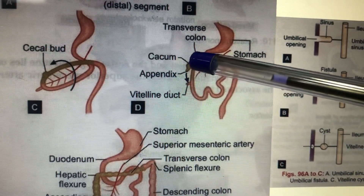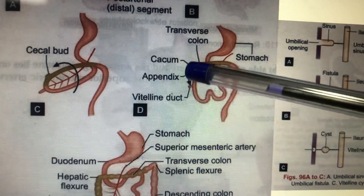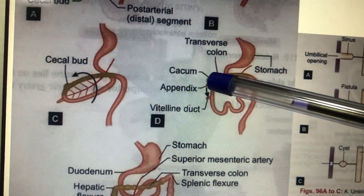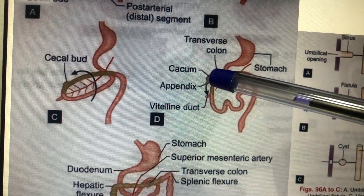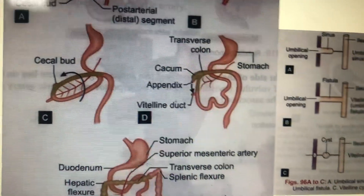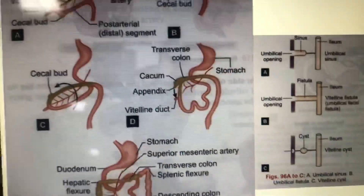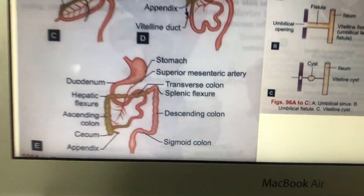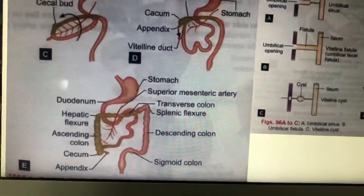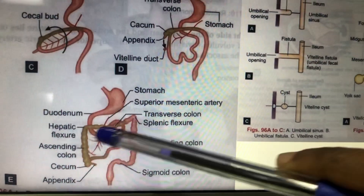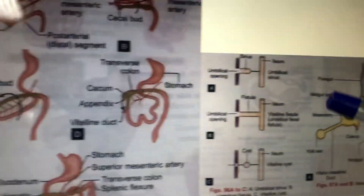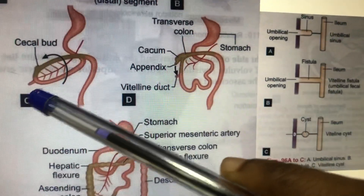Sometimes the final stage of descent does not happen, so some people will have their cecum and appendix near the liver — this is called sub-hepatic cecum. In the last stage of rotation, the colon is nicely positioned.